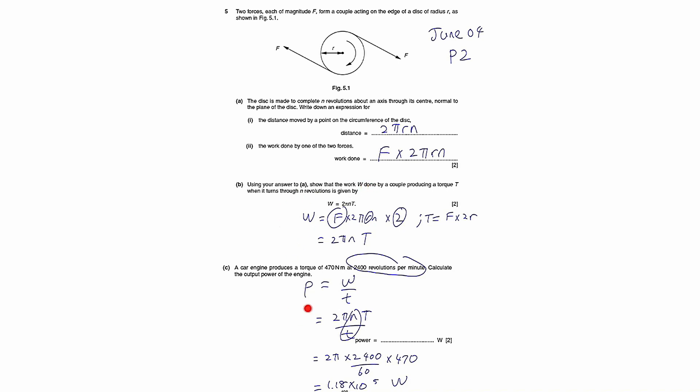We know that power is rate of work done, so work done divided by time. You can take the work done here, 2πnt, and divide by the time taken.